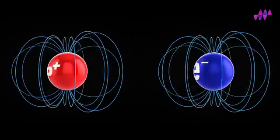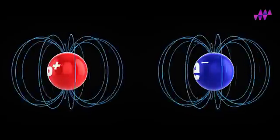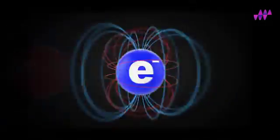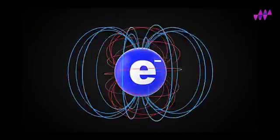As a result, we can conclude that the atom has electric energy stored in its protons and electrons, creating an electric field, as well as magnetic energy stored in its electrons, creating a magnetic field.